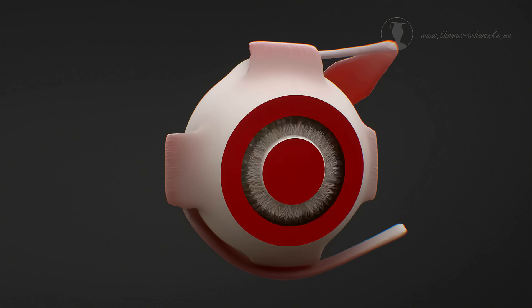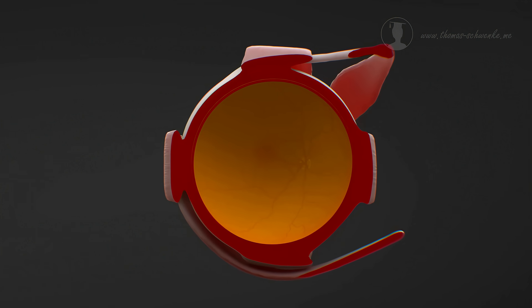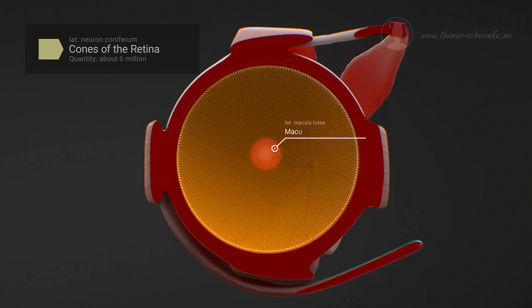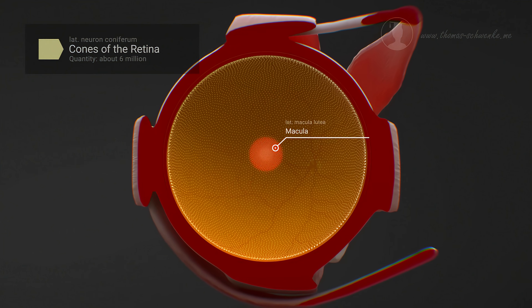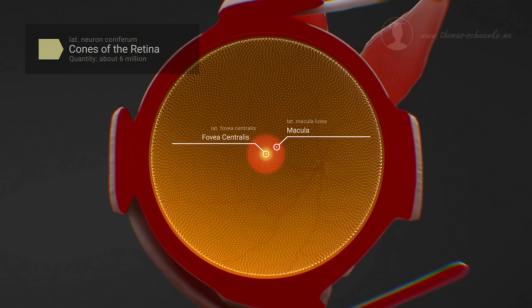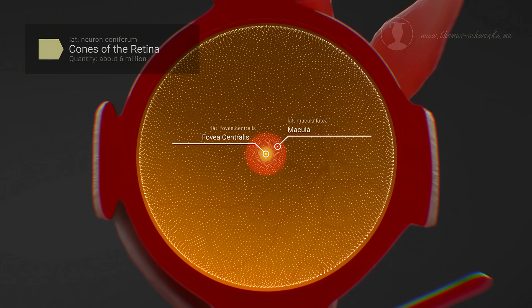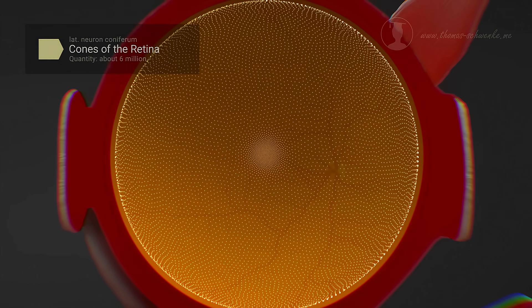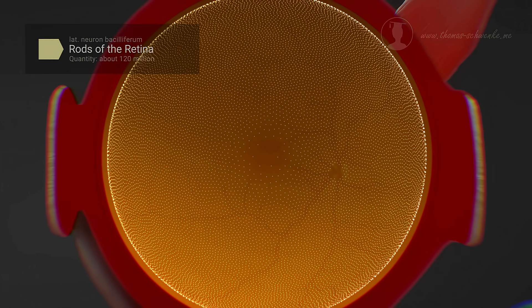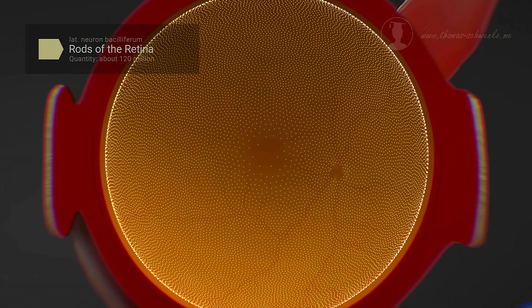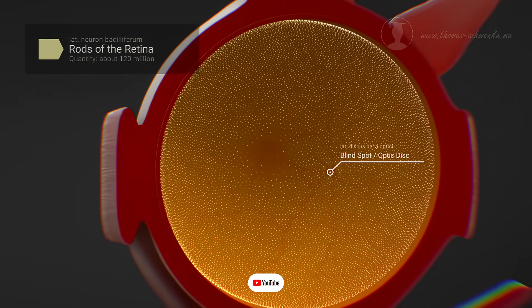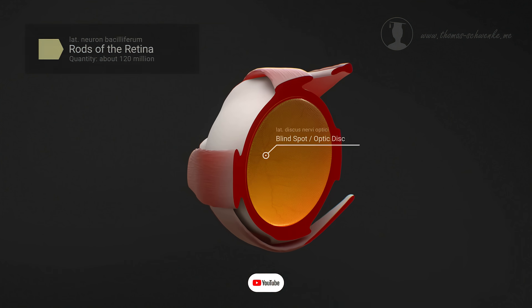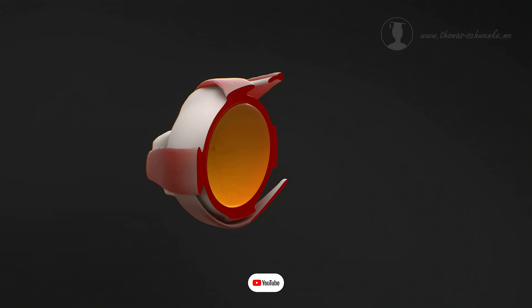Cones and rods are not evenly distributed across the retina. There are many cones in the centre of the retina — this area is called the macula. In the centre of this macula is the fovea centralis, which has the highest density of cone cells. For this reason, it is the area with the highest visual acuity. Rod cells, which we use for seeing in poor lighting conditions, are not found in the fovea. The area where the optic nerve meets the retina is called the blind spot, and we find neither rods nor cones there. For this reason, we are actually blind in this area.